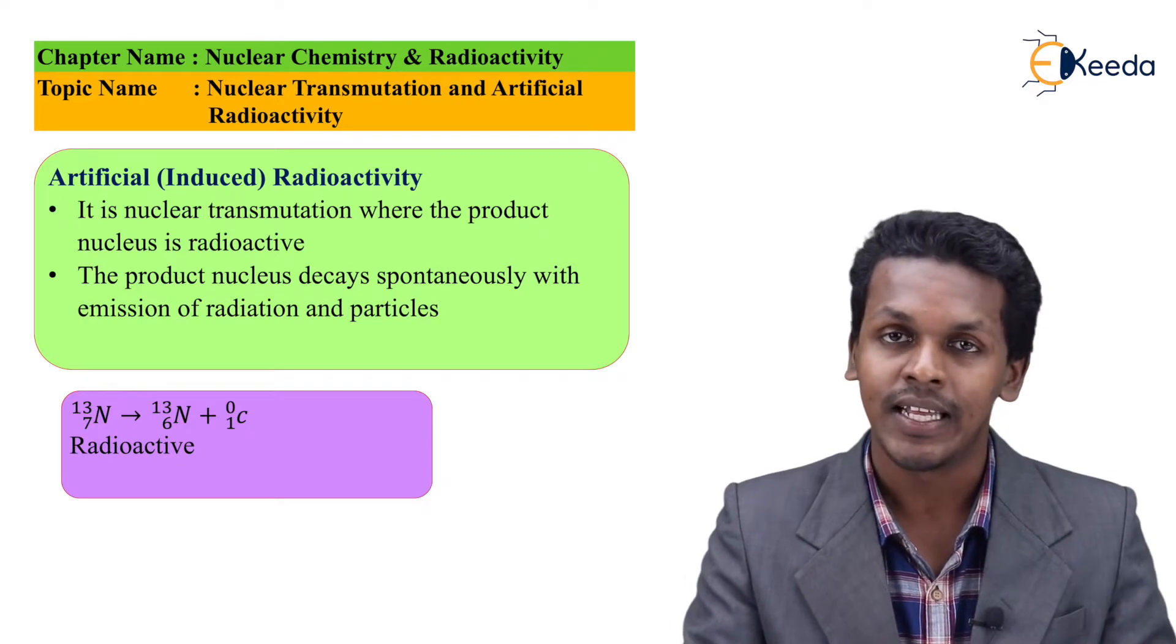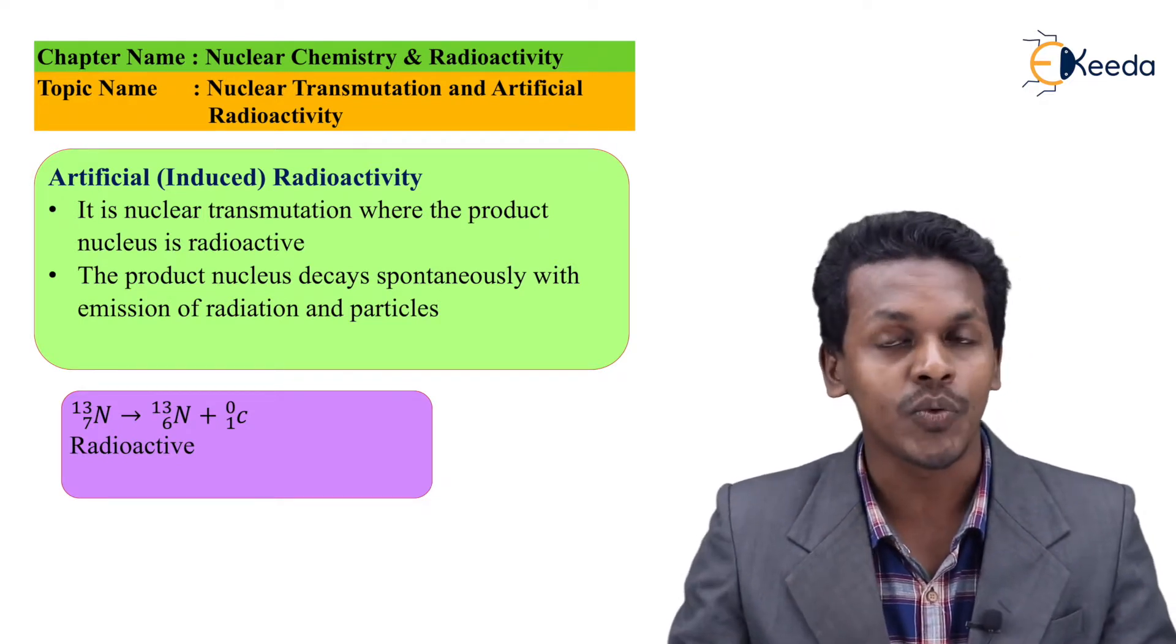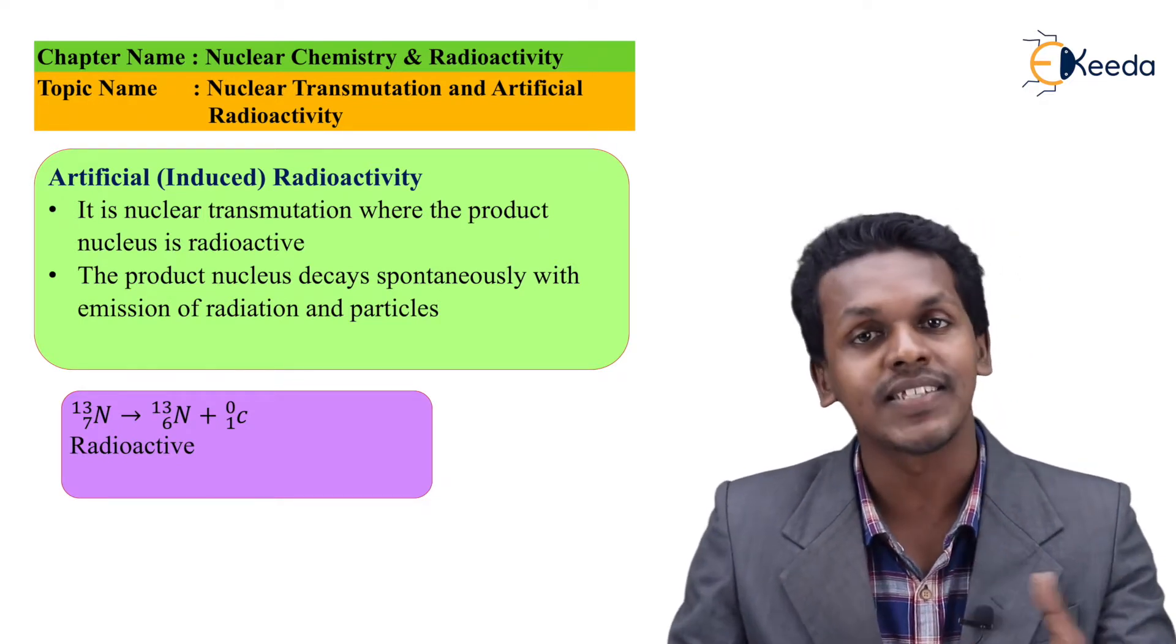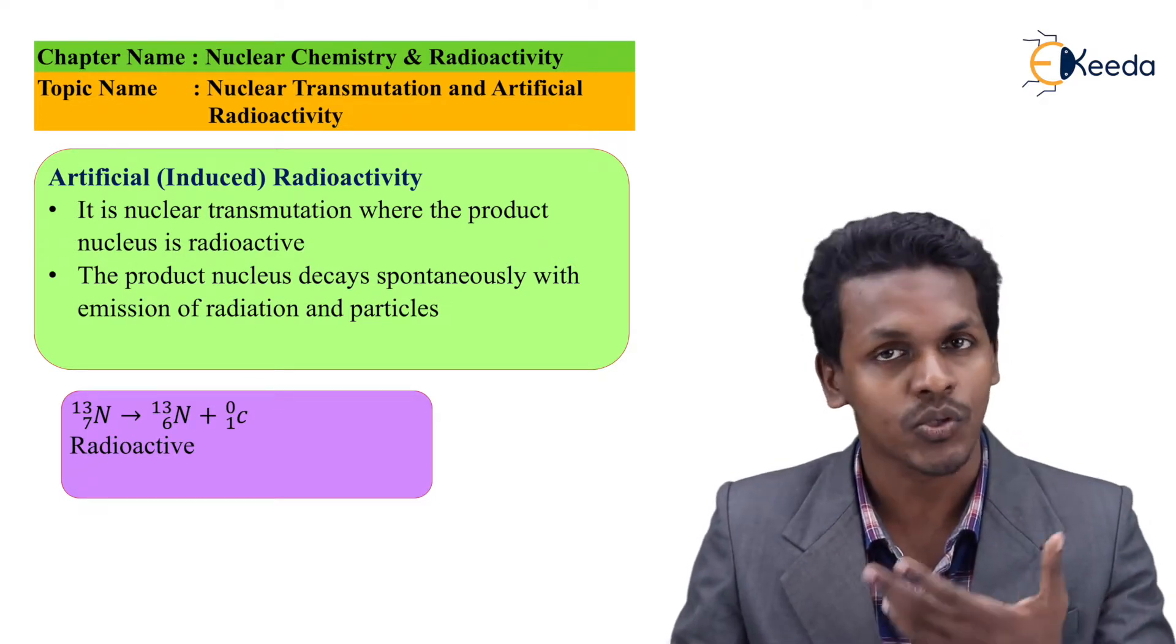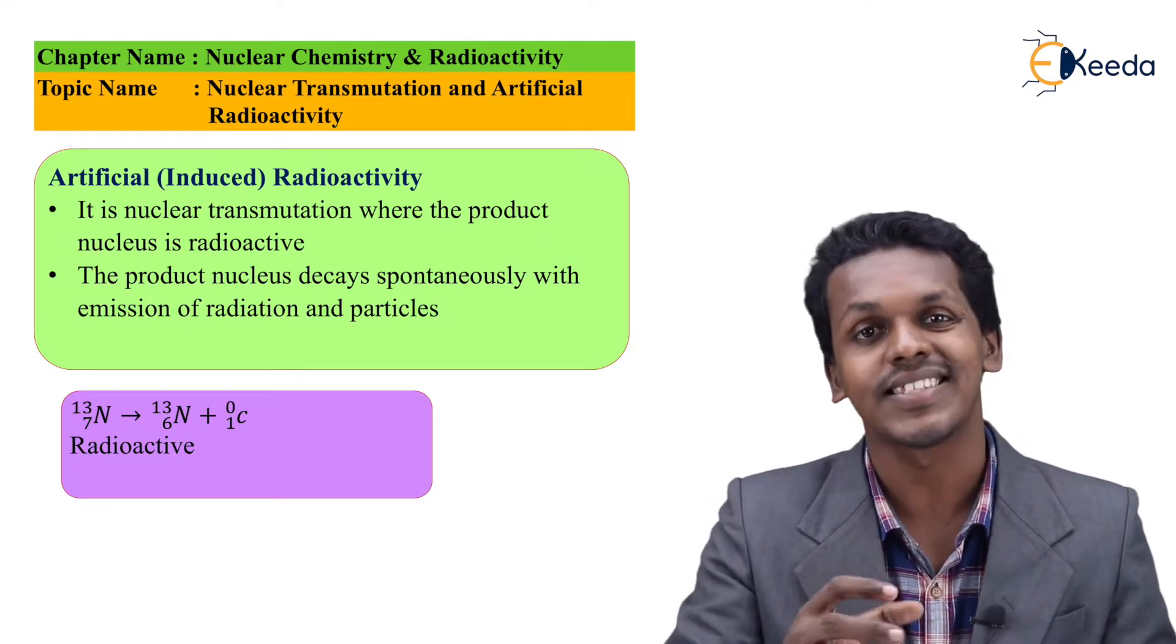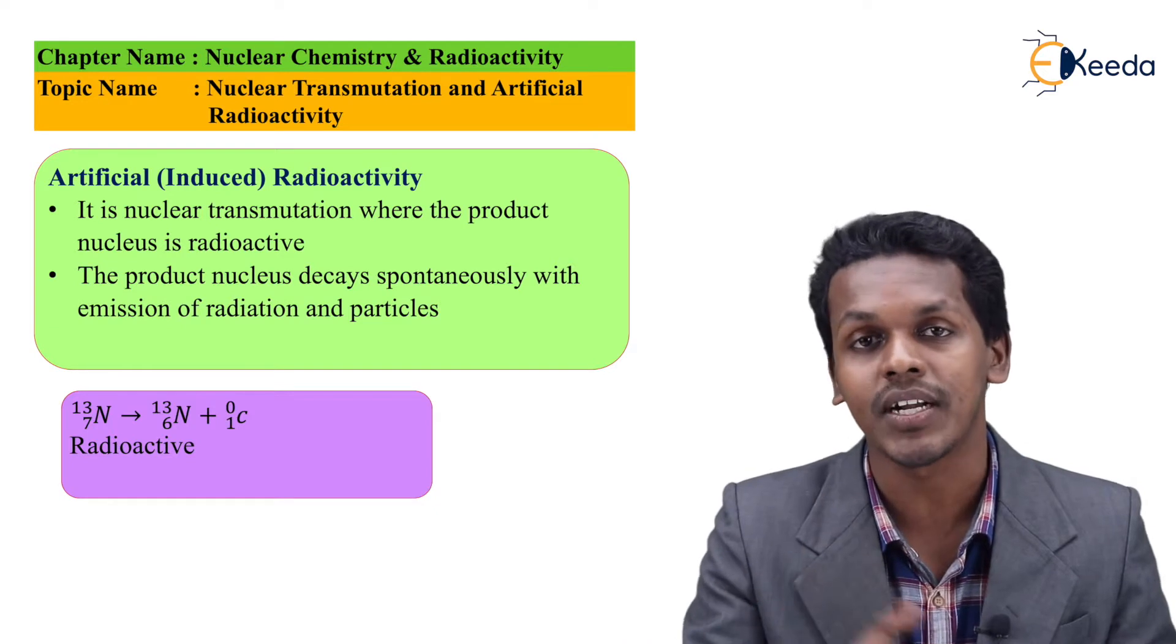For example, the particle that was produced when boron was bombarded with helium - the neutron - and the main product, the nitrogen radioisotope,